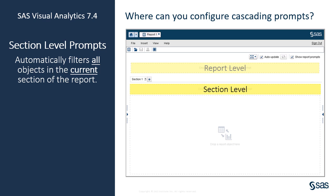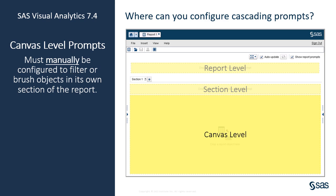The second level of prompting is section level prompts. If you add prompts to this area, they automatically filter all objects in the current section only. Again, multiple prompts in this area are combined with an AND operator. The last location for prompts is in the actual report canvas itself. Here you must manually configure the filter action to the target object — nothing is automatically affected, so you must manually create these actions.